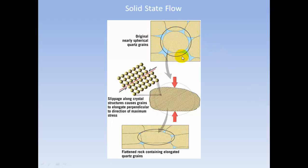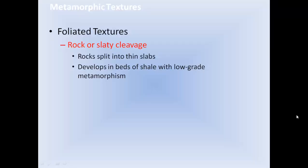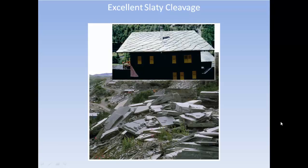Nearly circular quartz grains, under pressure, get flattened out and elongated. Slaty cleavage: the rock splits into thin slabs. It develops in shale under low-grade metamorphism, turning that shale into slate. You can actually hammer apart the layers of that slate, and the resulting slabs can be used as roofing tiles or paving stones in your garden.